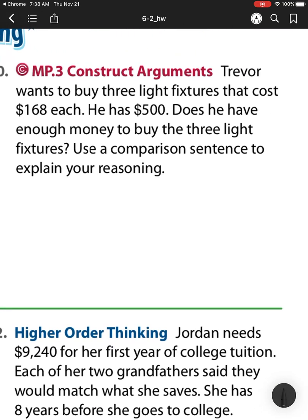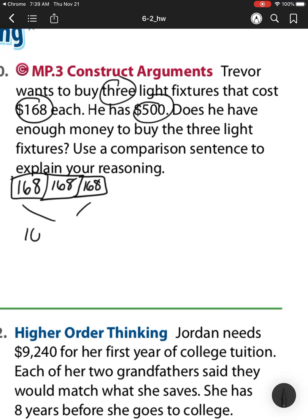Heading off to number 10. Trevor wants to buy 3 light fixtures that cost $168 each. He has $500. Does he have enough money to buy the 3 light fixtures? Use a comparison sentence to explain your reasoning. Well, first, let's see how much that would cost. So I would have 168, and I would have 3 groups of them, because it says he needs to buy 3 of them. So I see that's multiplication. So I have 168 times 3.